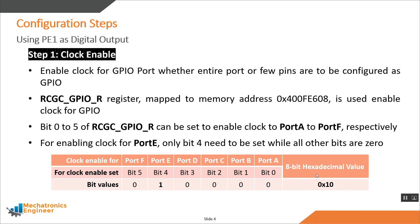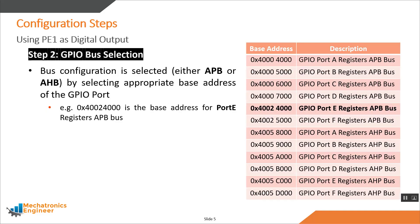The equivalent hexadecimal value that needs to be written to this register is 0x10. The second configuration step is GPIO bus selection. There are two on-chip buses connecting the processor core to the peripherals: the Advanced Peripheral Bus (APB) and the Advanced High-Performance Bus (AHB). We select one of these buses by using the appropriate base address for the GPIO port. This table shows the base addresses for each port on both buses. Let's select the Advanced Peripheral Bus for port E.